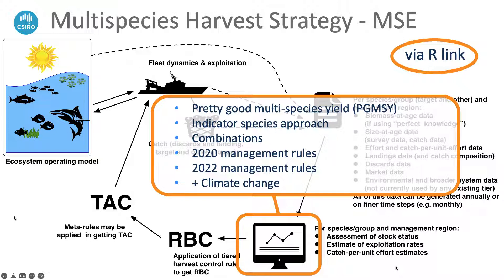They've asked us to cycle back and repeat the process of linking with the assessments, and this time we're doing it via R rather than a direct hard-coded C link. That's because they want us to test out a few different multi-species approaches — whether that's pretty good multi-species yield somewhat in line with how ICES does it, or an indicator-based approach that's been put forward in other Australian fisheries as a data-efficient way of managing a large number of species. We're also going to look at the management rules in place right up to very recent times — the 2020 management rules — and then some very late-breaking rule changes implemented literally in the last couple of weeks.